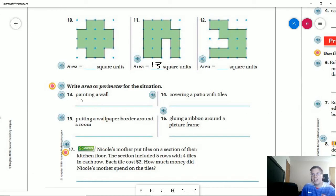Number thirteen - if we are painting a wall, we are painting the outside of the room, and so that would be our perimeter. Number fourteen - covering a patio with tiles. If we're laying down tiles, that would be kind of the inside portion of something on the patio, and that would be area. A wallpaper border would be similar to painting, that would be perimeter. And gluing a ribbon around a picture frame would go around the picture frame, so that would also be perimeter.